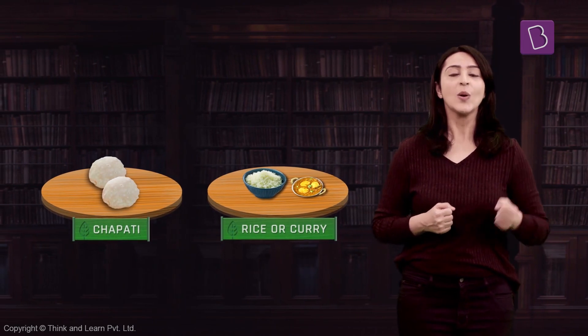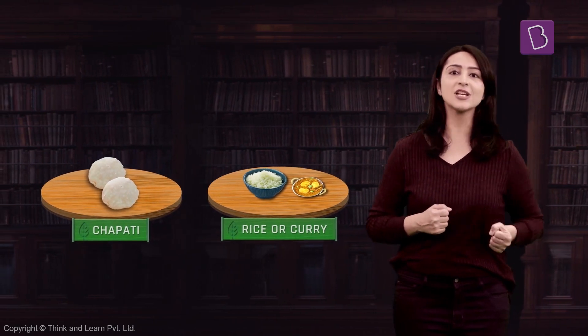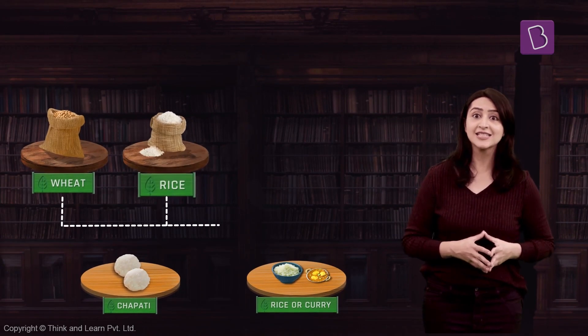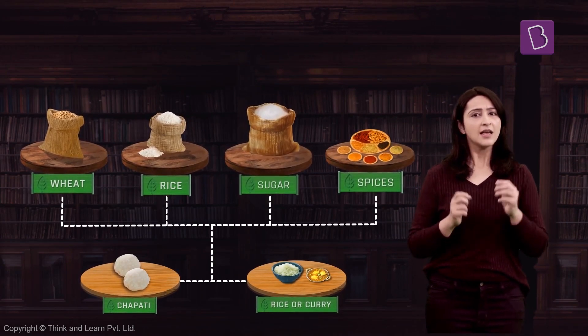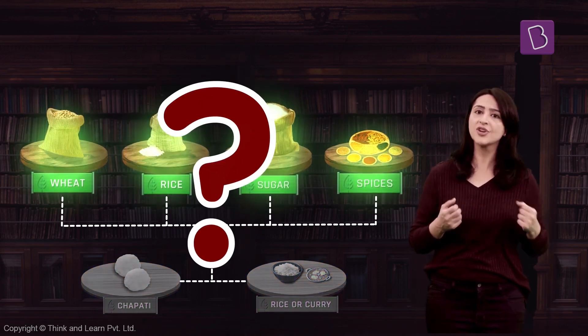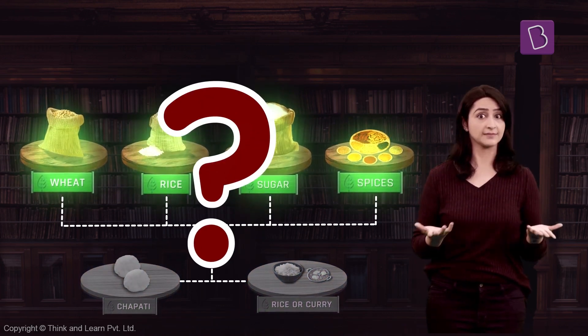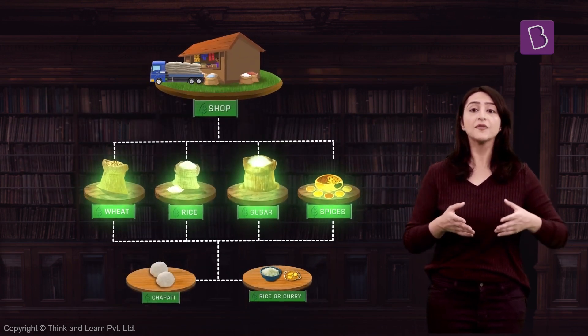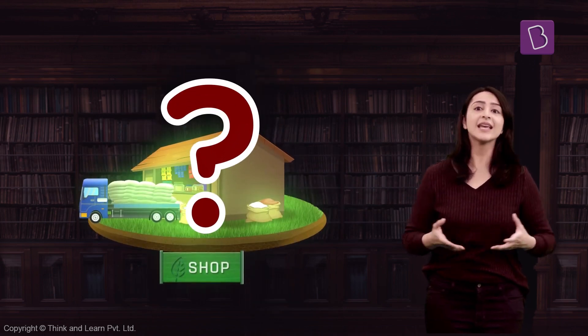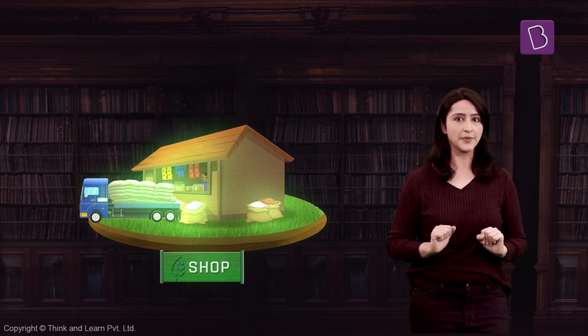Whatever the dish may be — chapati, rice, or curry — we will require different ingredients like wheat, rice, sugar, and spices. But have you ever thought about where these ingredients come from? You might have bought these items from your nearby shops, but from where does the shop get such diverse food items?